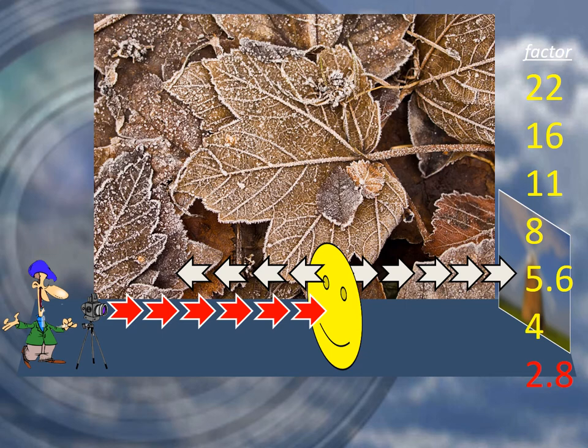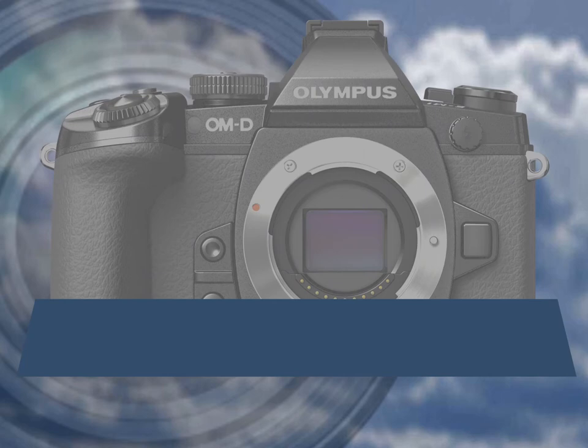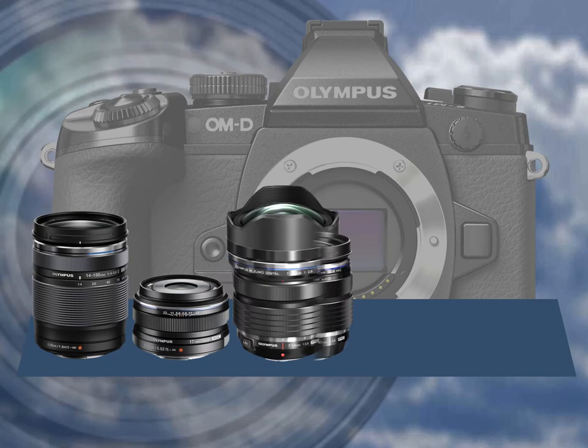Unfortunately, the amount at each stage is not constant and almost impossible to show on a graph, as it is also governed by lens choice and size of sensor.